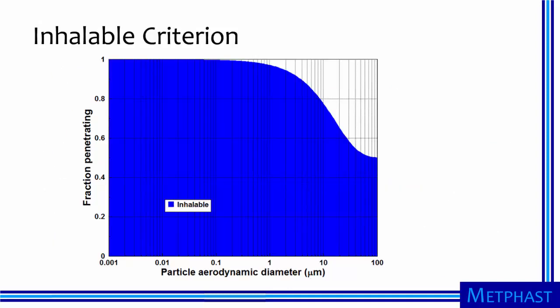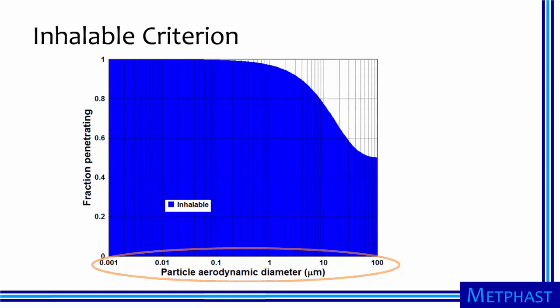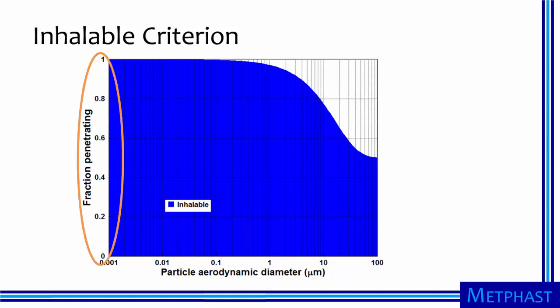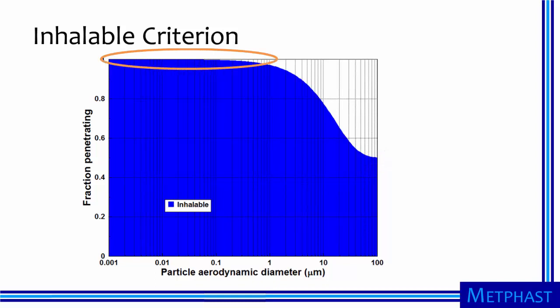This diagram shows the inhalable sampling criterion graphically. The criterion is an equation for the fraction of particles at each size that can be inhaled. Size, on the horizontal axis, is defined as the aerodynamic diameter — the diameter of a spherical particle with a density of water that settles, due to gravity, at the same velocity as the particle you're interested in. The aerodynamic diameter is shown on a logarithmic scale, meaning each order of magnitude is evenly spaced. The fraction from 0 to 1 is on the vertical axis on a linear scale. The blue area represents inhalable particles — about 50% of 100 micrometer diameter particles can be inhaled, and almost all particles one micrometer and smaller can be inhaled.